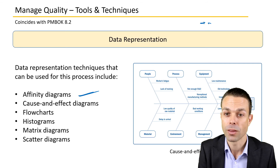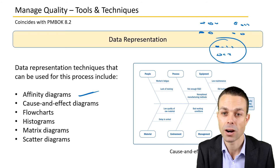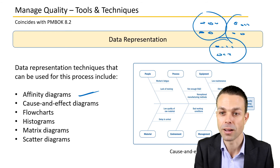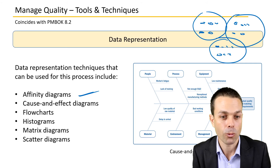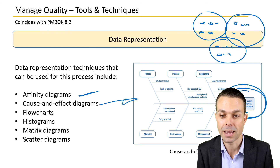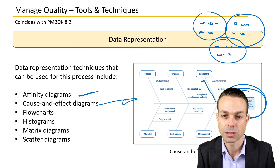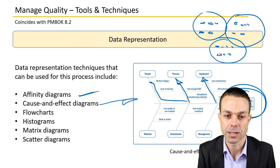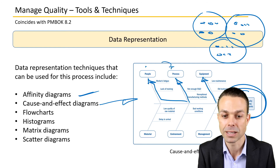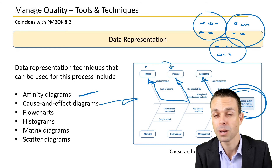Data representation tools include affinity diagrams, which group ideas or options that have an affinity with each other. Cause and effect diagrams — also called fishbone or Ishikawa diagrams — show the problem at the head of the diagram with different options for brainstorming causes: people, process, information, systems, and many other categories.